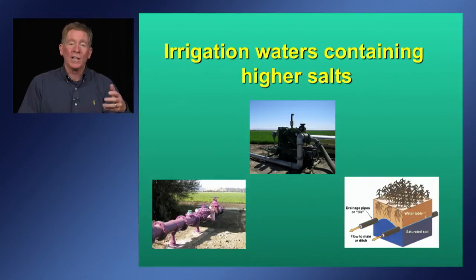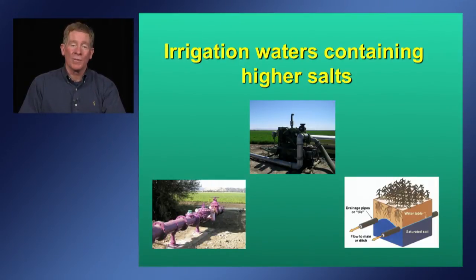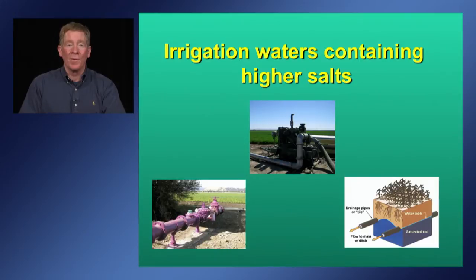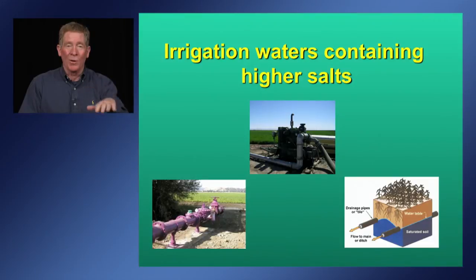Certain irrigation waters contain more salts than others. Well waters typically have more than surface waters. Recycled water almost always has higher salinity than the main source, as well as agricultural drainage water, where water is passed below the soil profile, collected, drained off into rivers and streams, and reused.